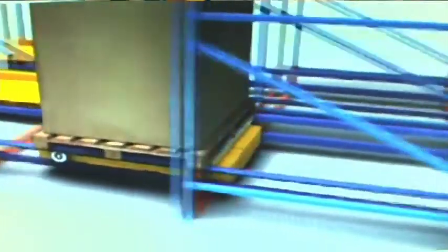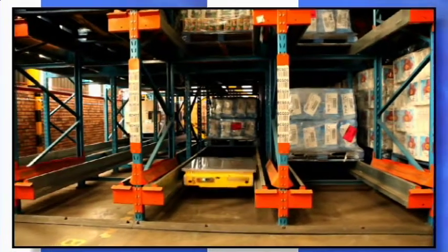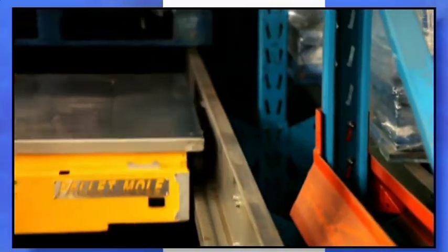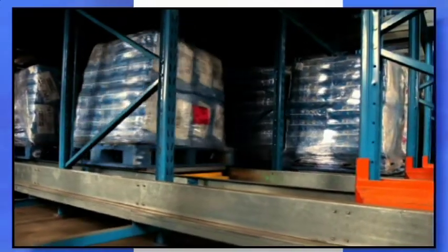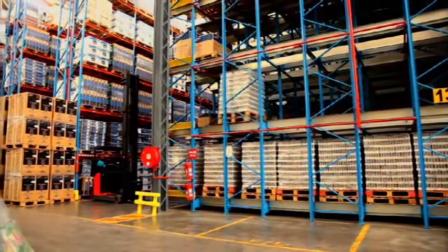The pallet mall runs underneath pallet loads on rails, delivering and extracting loads within a deep lane pallet rack system. Its electromechanical platform lifts and lowers pallets into position.